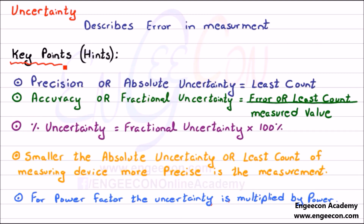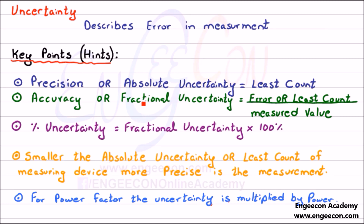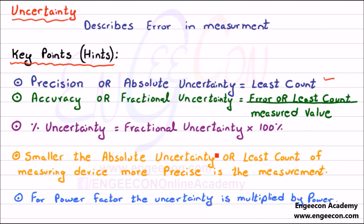Here we have very important key points and hints regarding uncertainty which will help you solve MCQs in seconds. Precision or absolute uncertainty is equal to least count. Accuracy or fractional uncertainty is equal to error or least count divided by measured value. Percentage uncertainty is equal to fractional uncertainty multiplied by 100%. And smaller the absolute uncertainty or least count of a measuring device, more precise is the measurement. For power factor, the uncertainty is multiplied by the power.